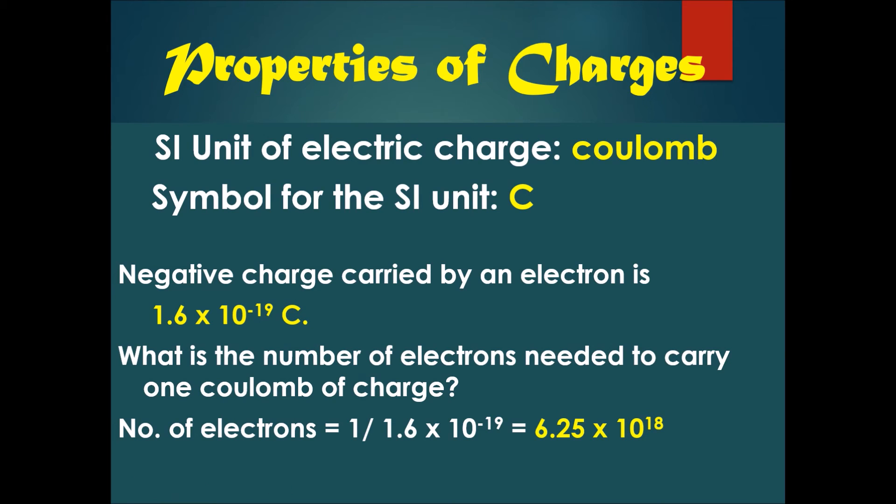What is the number of electrons needed to carry one coulomb of charge? It would be 1 divided by 1.6 times 10 to the power of minus 19, which equals 6.25 times 10 to the power of 18.